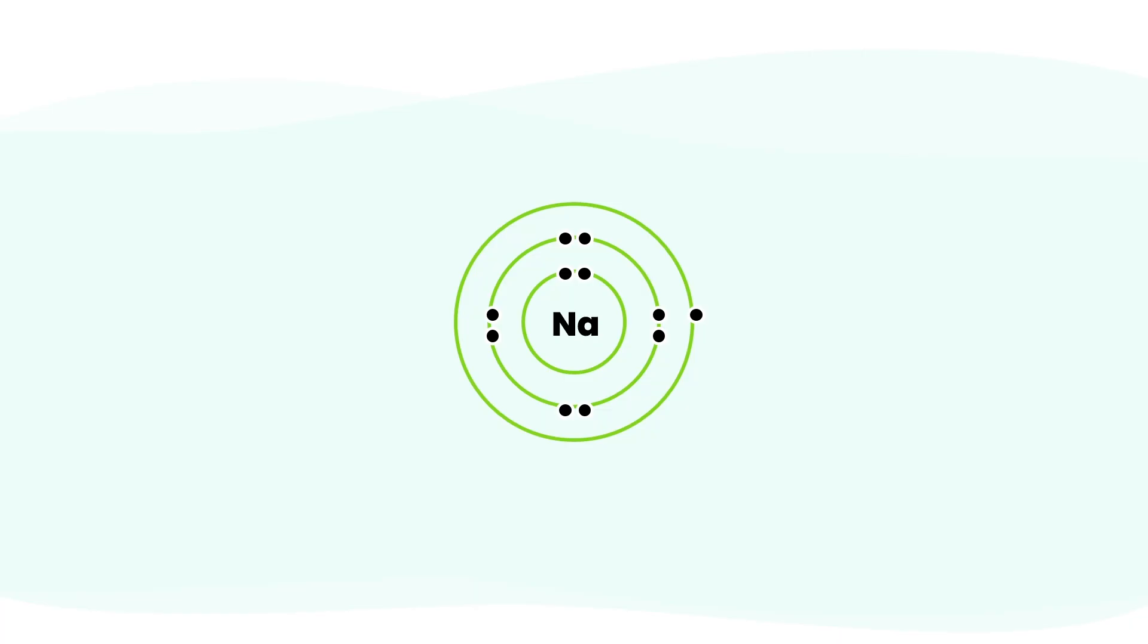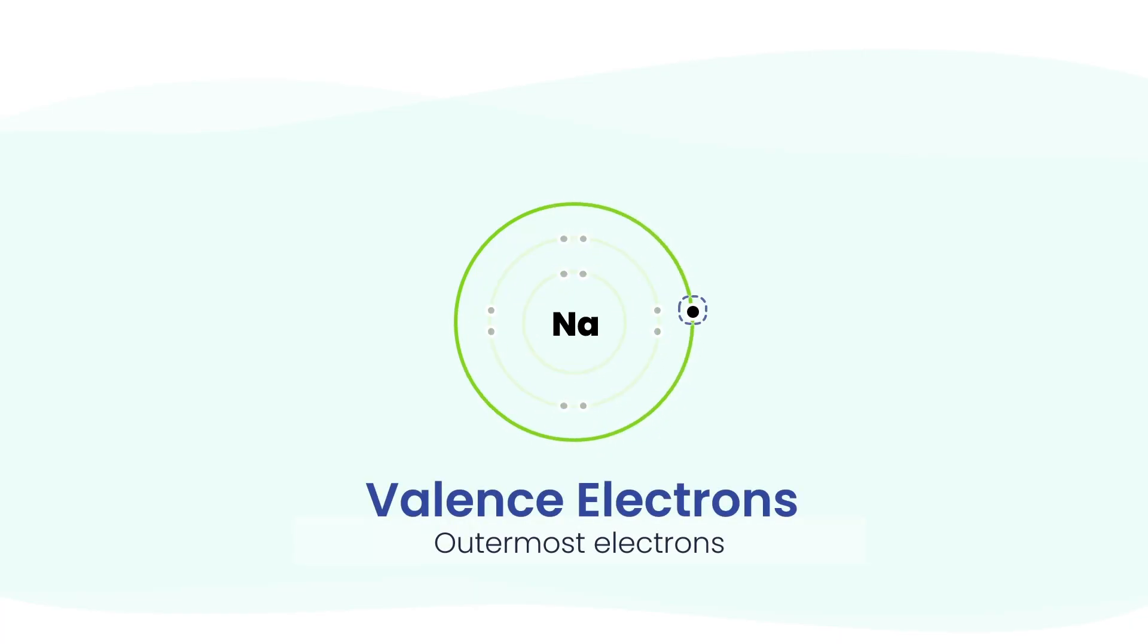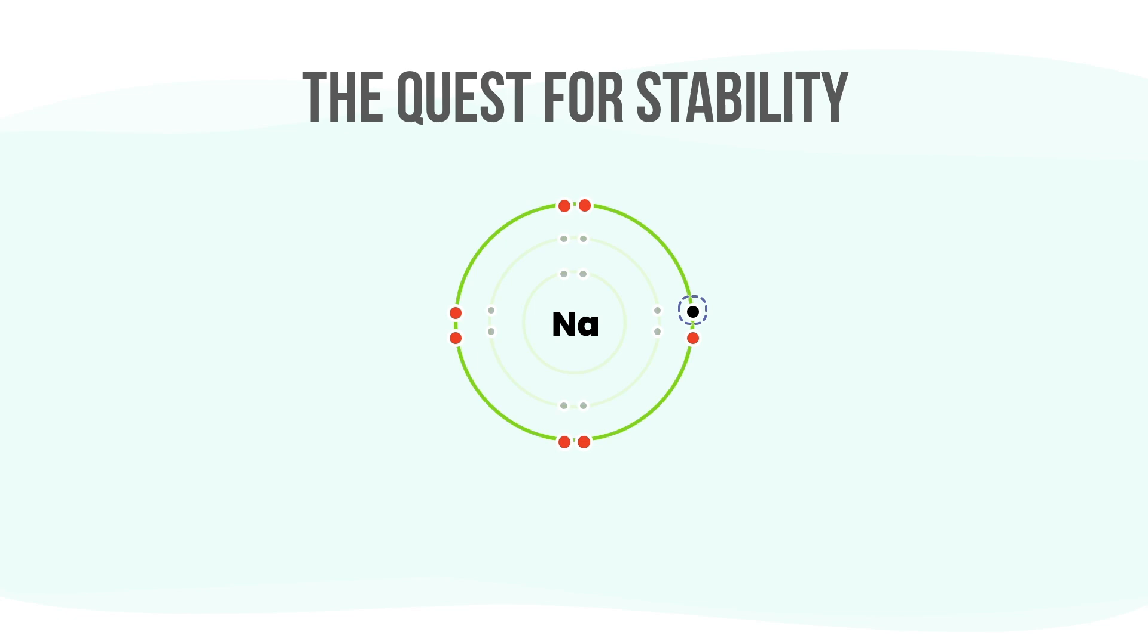Every atom has layers of electrons like planets around the sun. The outermost ones are called valence electrons and they are the only ones that matter in chemical reactions. Why? Because atoms want a full outer shell - that's the stable state. So they'll give, take, or share electrons to get there.